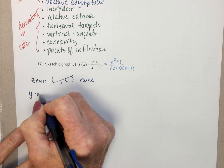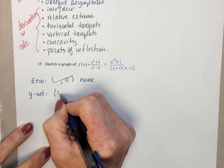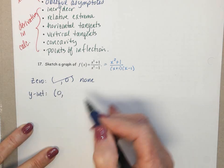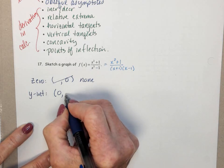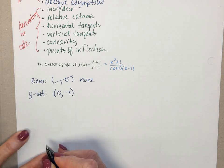A y-intercept happens when x is equal to zero. So, if we plug in x equals zero, we get 1 over negative 1, or negative 1.